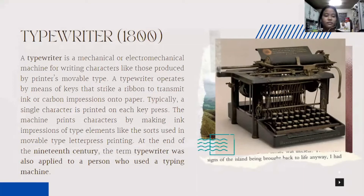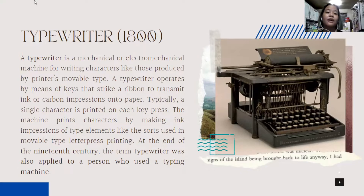So let us go to the typewriter in the 1800s. The typewriter was invented by Christopher Latham Scholes. Since keyboards were not yet available in this period, people used this device. A typewriter is a mechanical or electromechanical machine for writing characters like those produced by printers' movable type. It operates by means of keys that strike a ribbon to transmit ink or carbon impressions onto paper. Typically, a single character is printed on each key press. The machine prints characters by making ink impressions of type elements. At the end of the 19th century, the term typewriter was also applied to a person who used a typing machine.